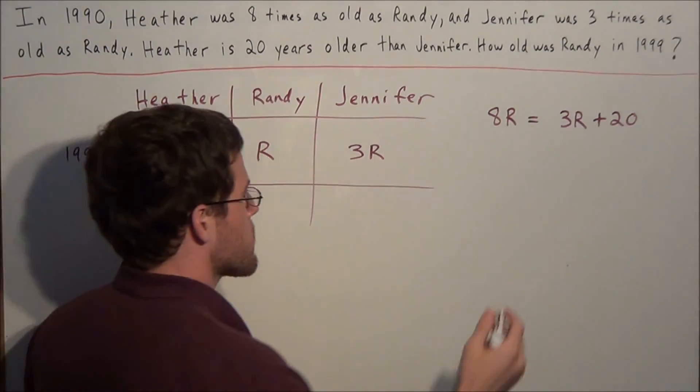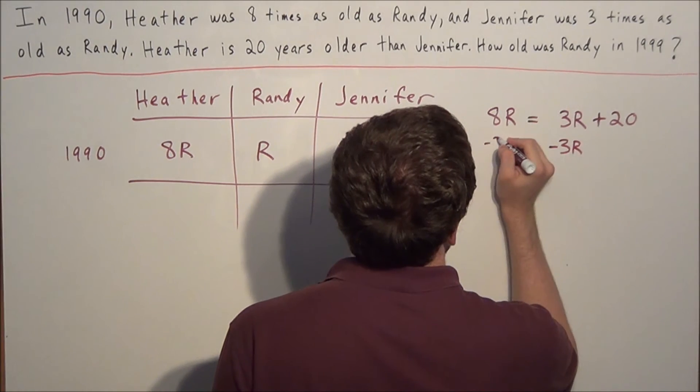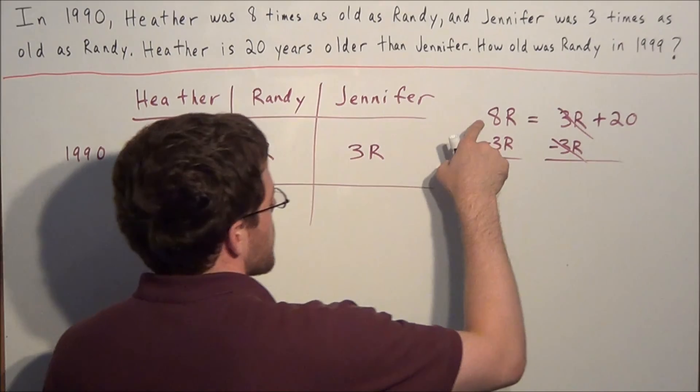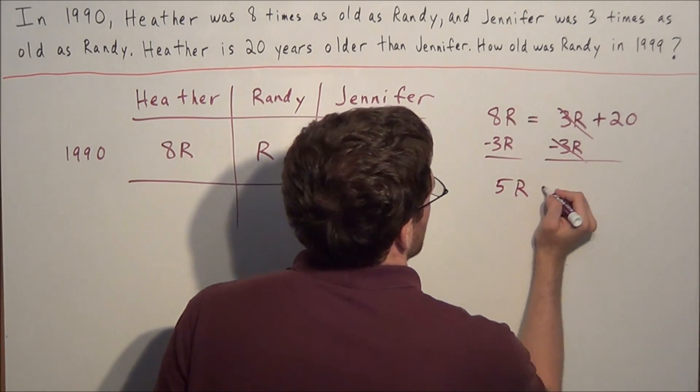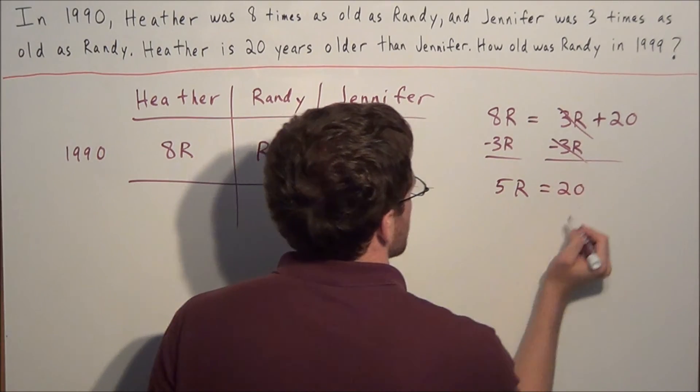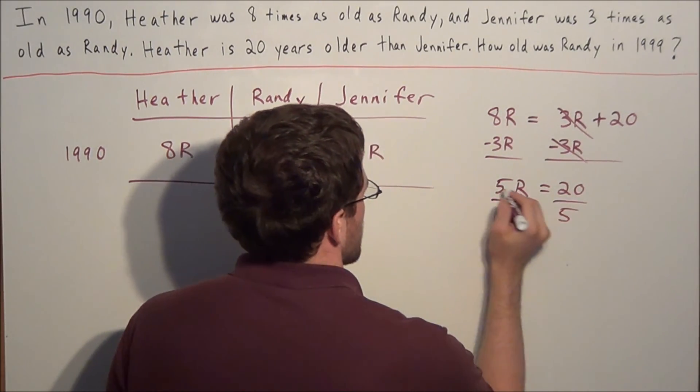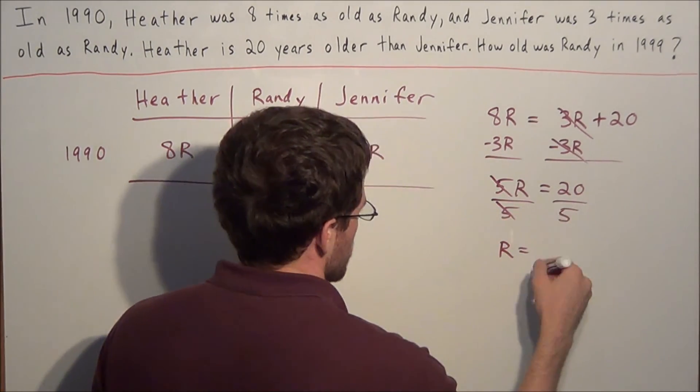So now all we need to do is solve for r. We're going to subtract 3r from both sides. Now 3r minus 3r will cancel. And now we have 8r minus 3r is 5r. And this is equal to 20. So we divide both sides by 5. And then this gives us r equals 20 divided by 5 is 4.